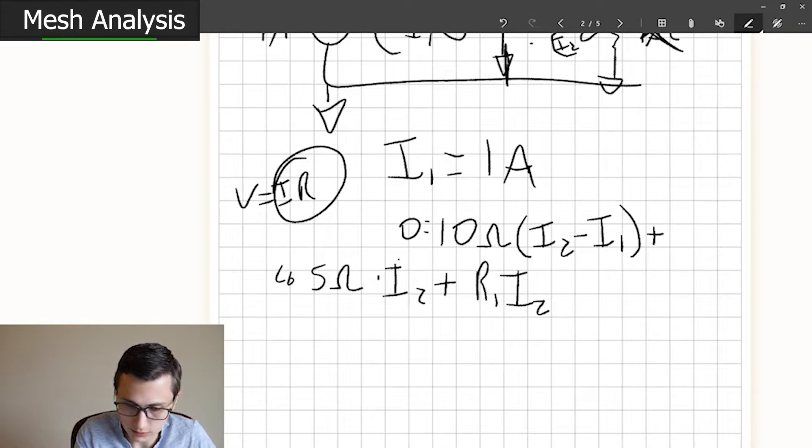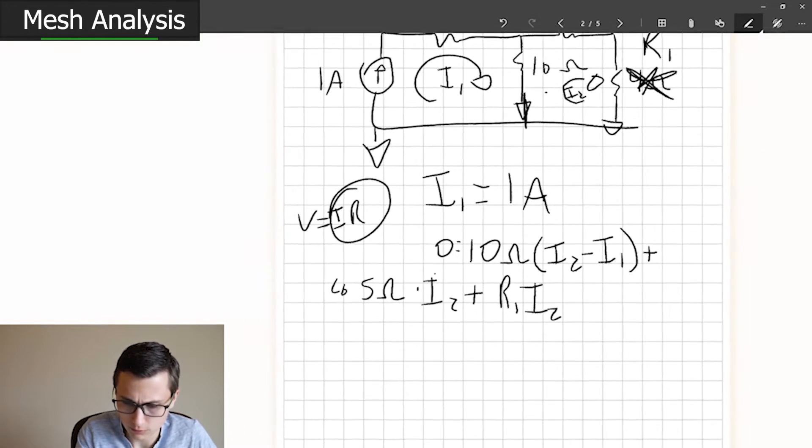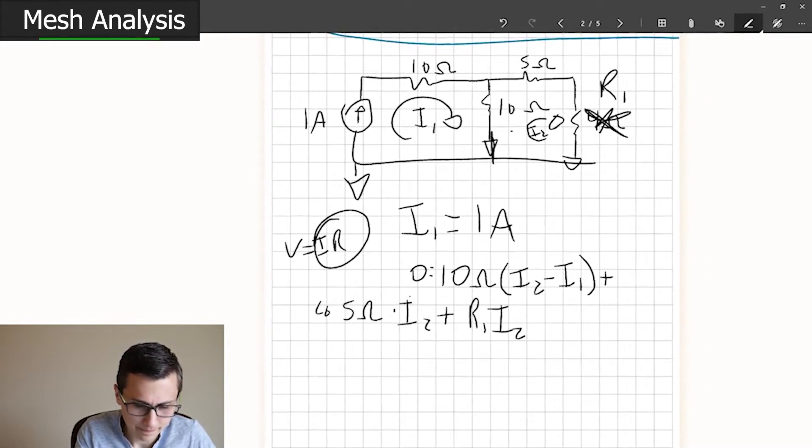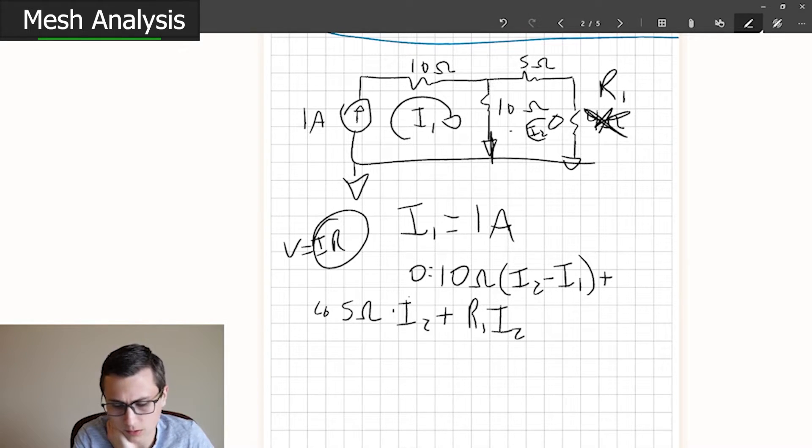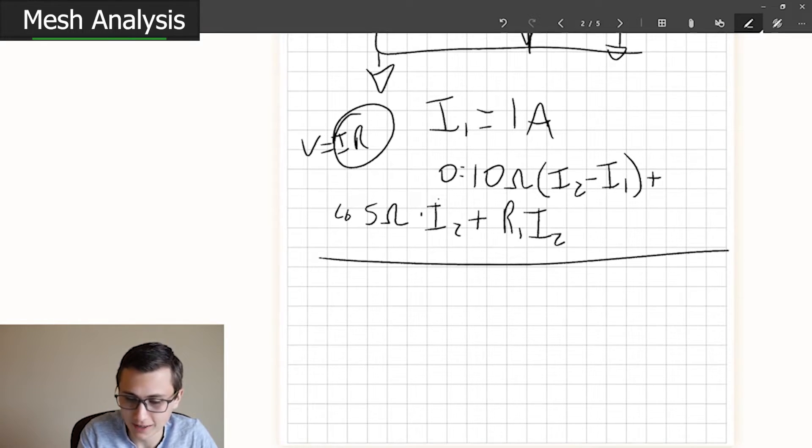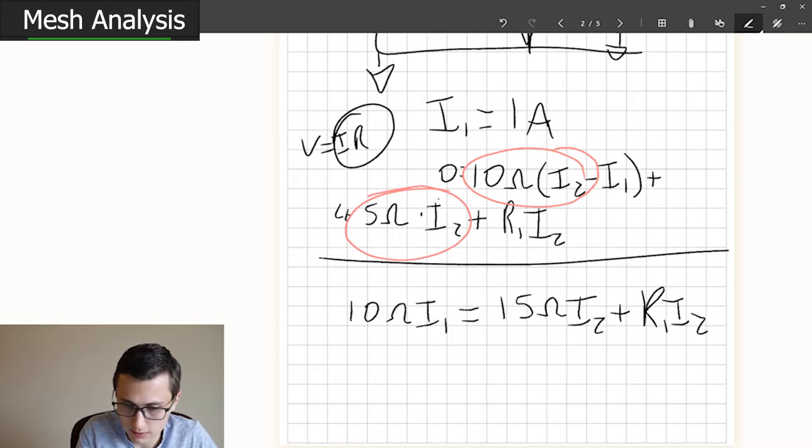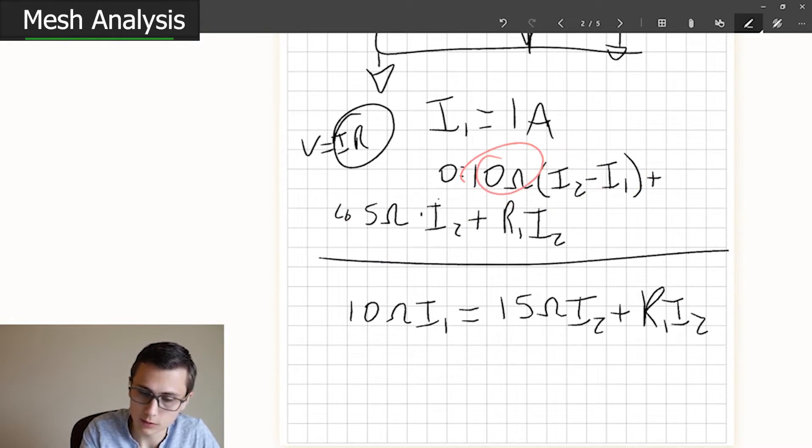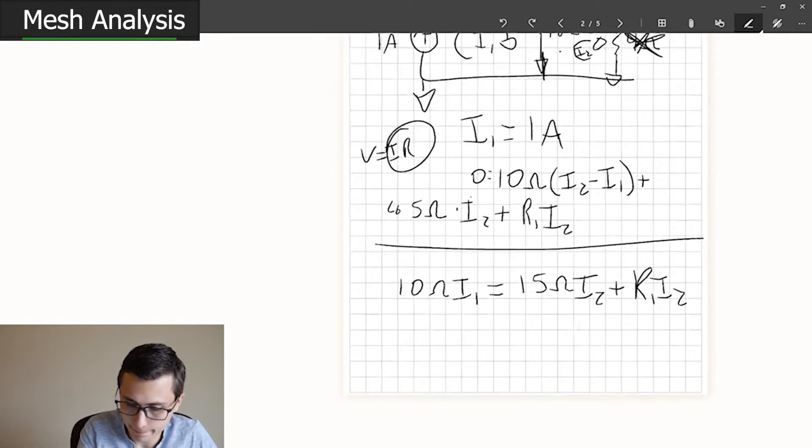And looking to simplify this a little bit, we actually have some numbers that we can plug in. Let's try to solve this for, what do we want to solve for? I2? What makes sense? R1? Solving for R1 as a function of I2 doesn't make any sense. Solving for I2 as a function of R1 makes sense. So let's say we wanted to set the current. Yeah, why not? It's an example we can solve for whatever we want. 15 ohms I2 plus R1 I2, where did that come from? I combined this plus this. That's our 15, 10 plus five. The 10 ohm term and the negative I1 got pulled over to this side of the equation.